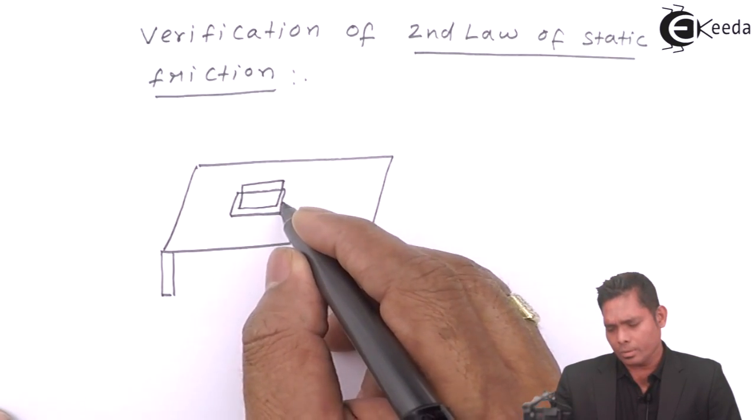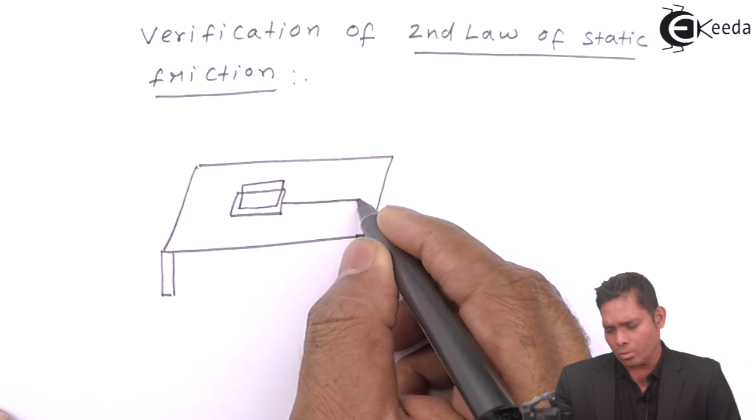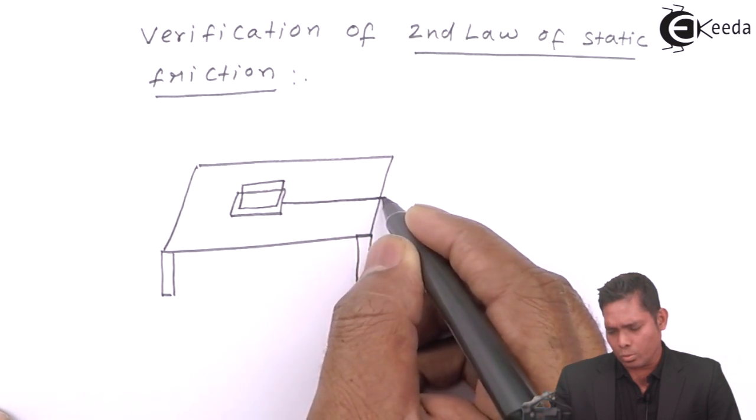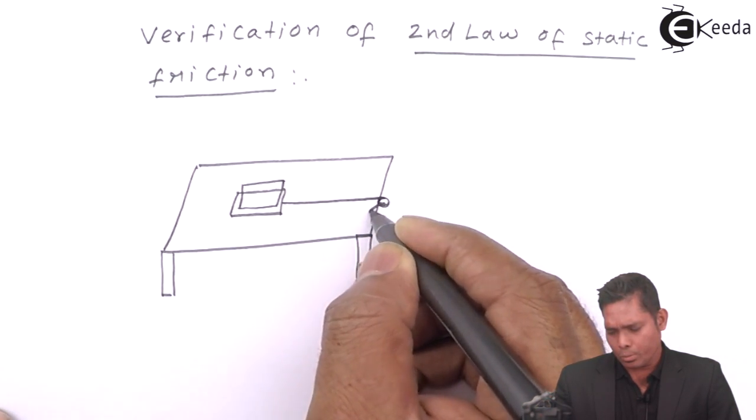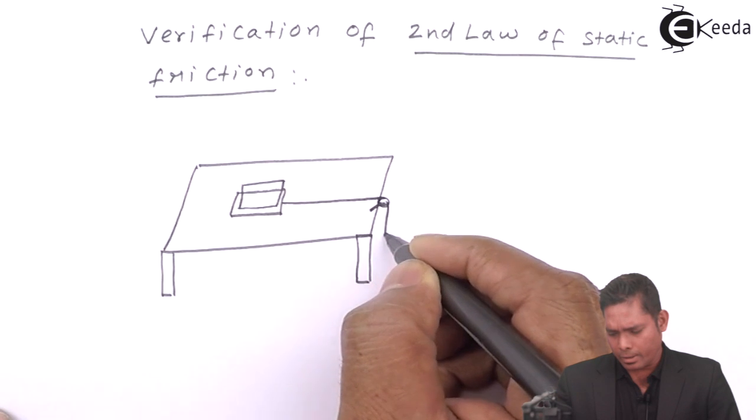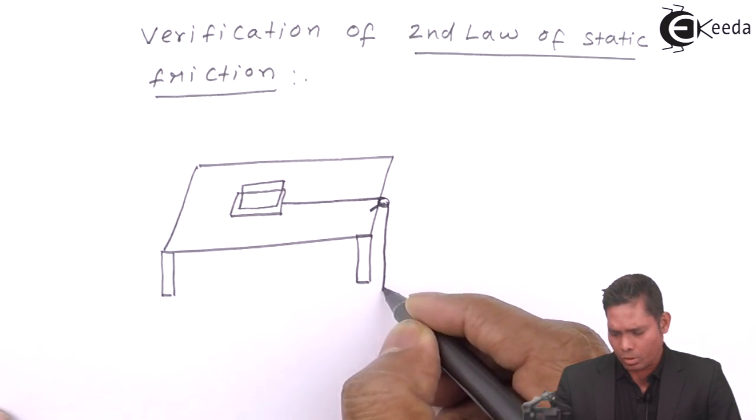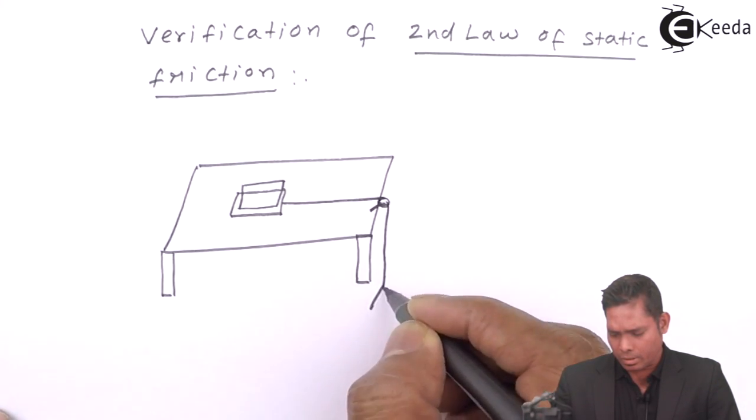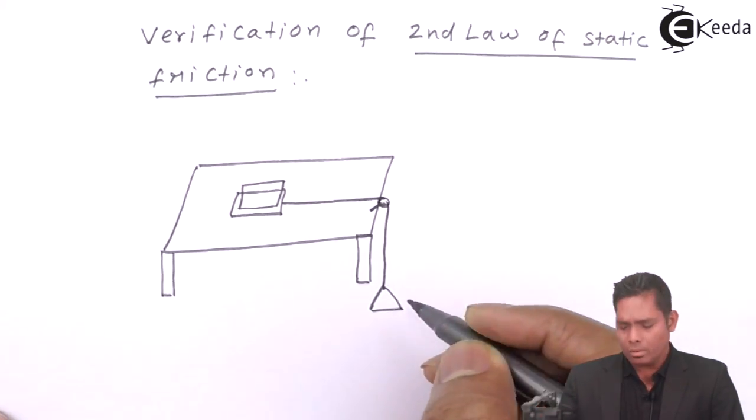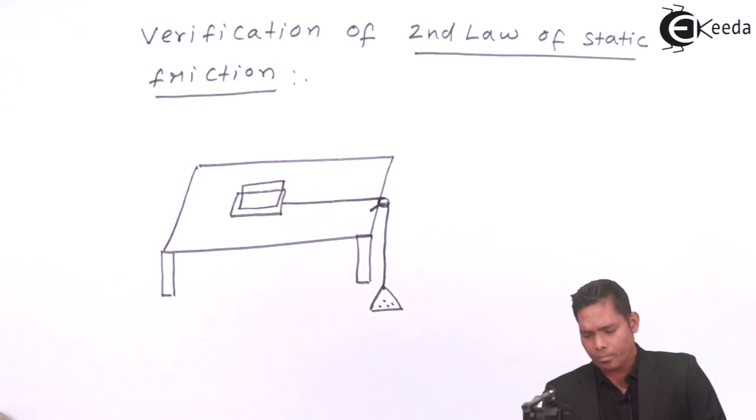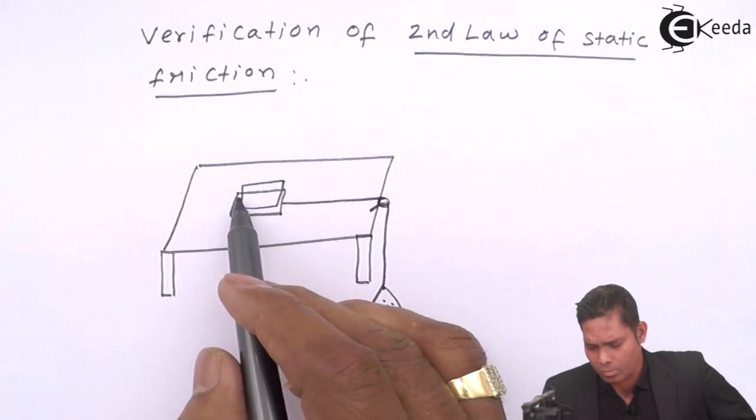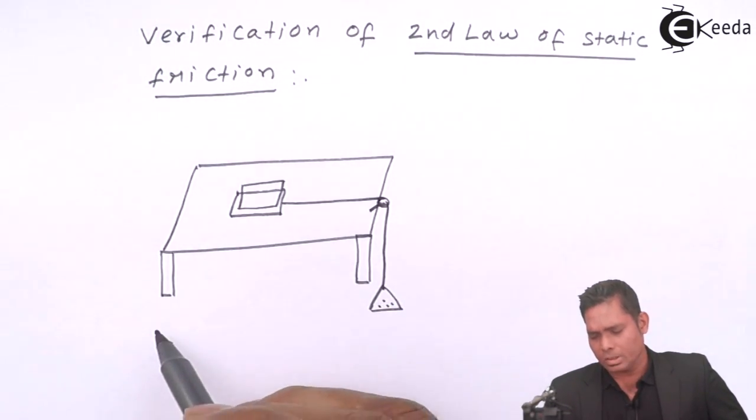Here is the string which goes over the pulley. The pulley is here and to the other end, there is a pan where mass has to be added. Now, two blocks, one over another is kept.